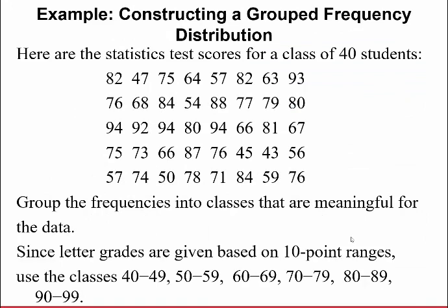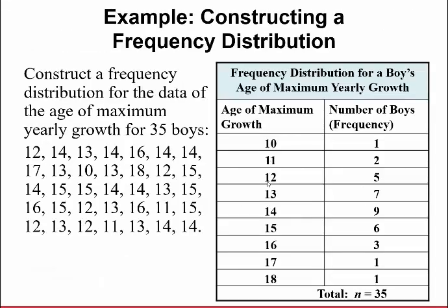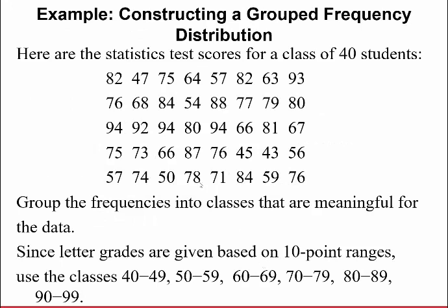Another way you could do this is here are some statistics. This is when you have grouped frequency data or group frequency distribution. Here are the statistics test scores for a class of 40 students. So I've got 40 raw numbers. When you have something like this, where the numbers don't repeat too often, what you don't want to do, especially when the numbers don't go in a row, what we want to do is we want to group the frequencies into classes that are meaningful for the data.